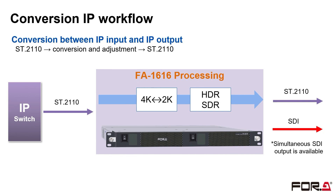Video can be processed as an IP signal. It can down-convert incoming IP video from 4K to 2K, process HDR and SDR conversion, and output it as an IP signal. There is no need to convert the IP signal to SDI for video processing, process it in SDI, and then convert it back to IP. This can be achieved with a single FA1616 unit.